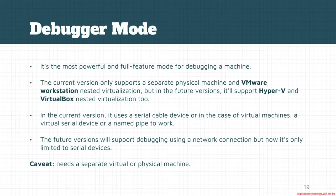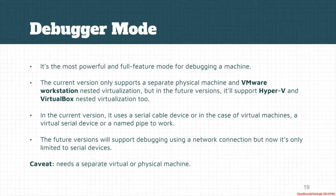Debugger mode is the most powerful and full-featured mode of HyperDBG. At the time of recording, HyperDBG supports physical machines and VMware Workstation nested virtualization, and also other VMware products. In the future, it will support Hyper-V and VirtualBox nested virtualization. Supporting Hyper-V is really hard — there are many things that need to be implemented. The reason the initial version only supports VMware is because it's easier; we spent a lot of time on Hyper-V and it's still a challenging part.